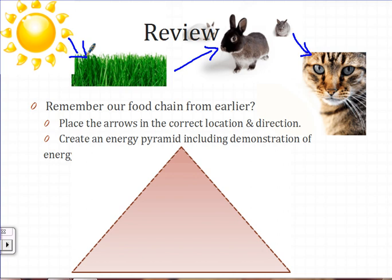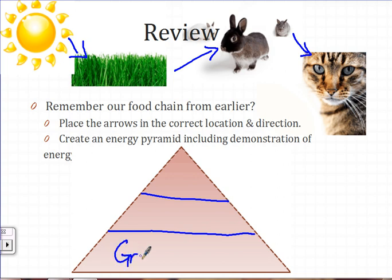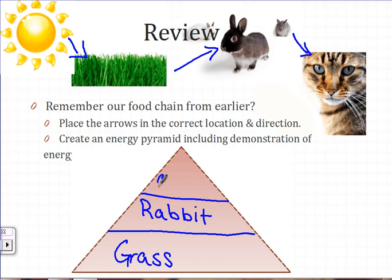Create an energy pyramid including a demonstration of energy loss. The bottom level should always have your producer — in this case, grass. Then come our primary consumers, our herbivores — in this case, the rabbit. And our secondary consumers at the top — in this case, the cat. If we did have a tertiary consumer, such as a wolf, it would be added at the top.